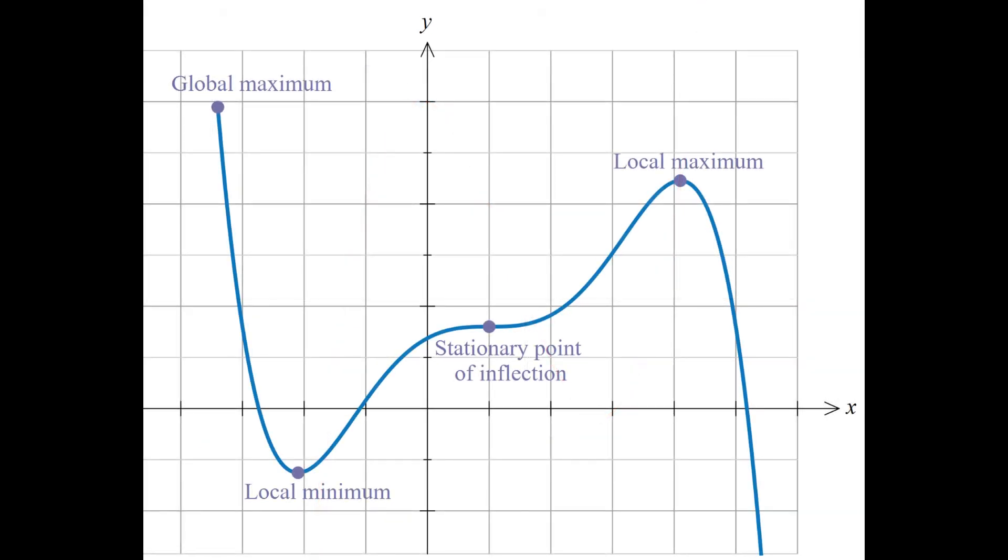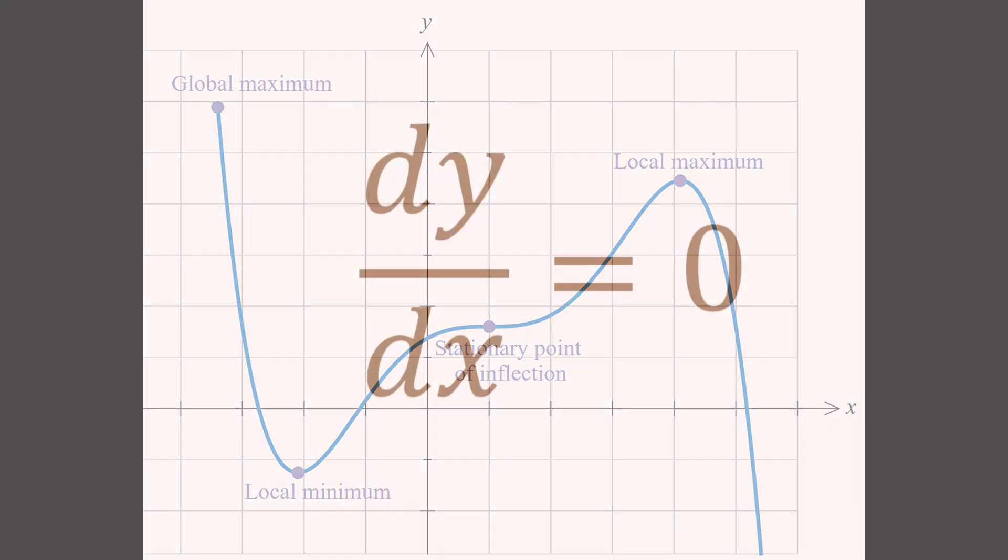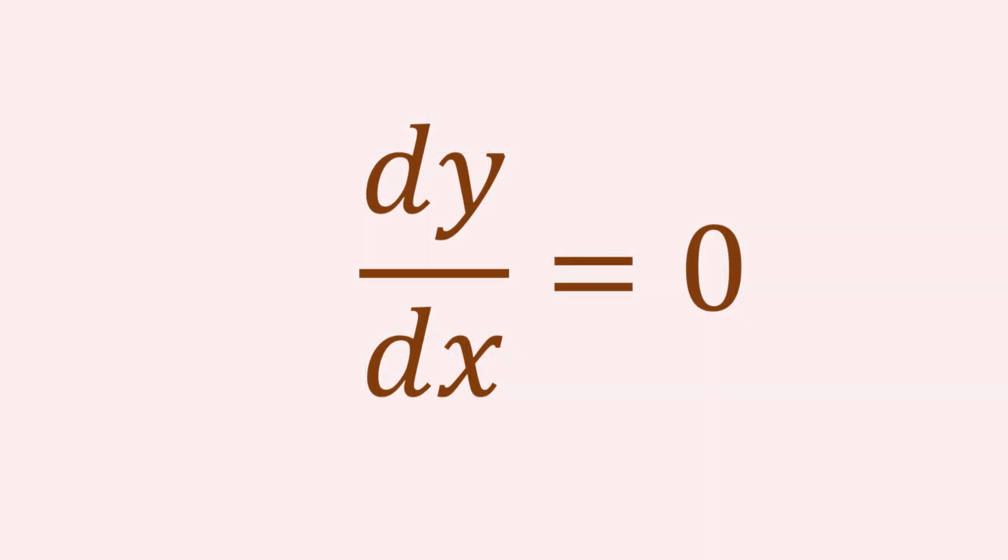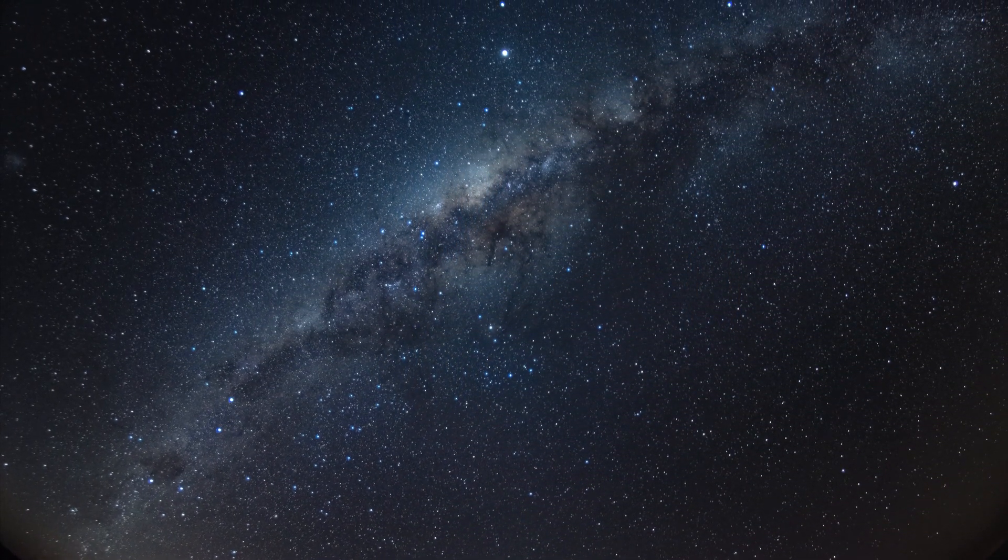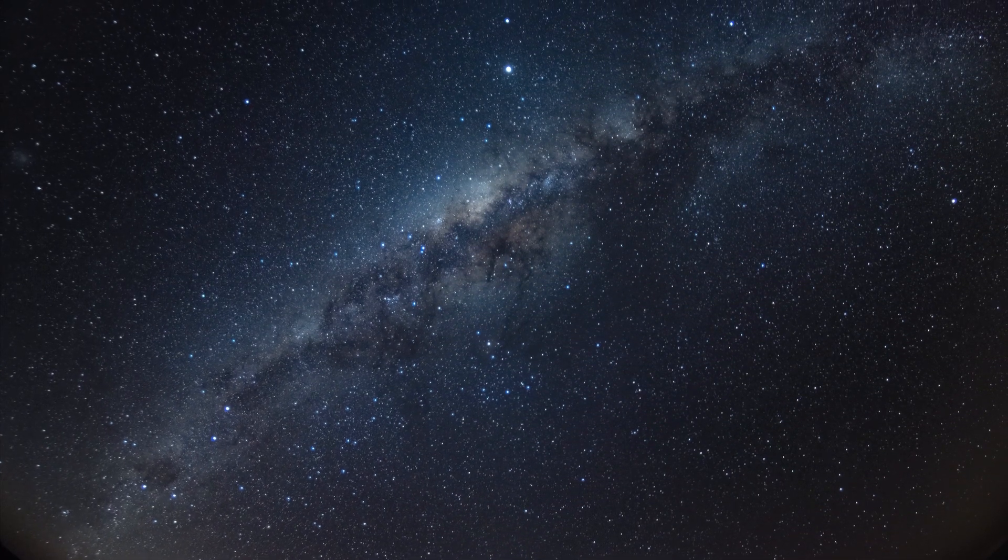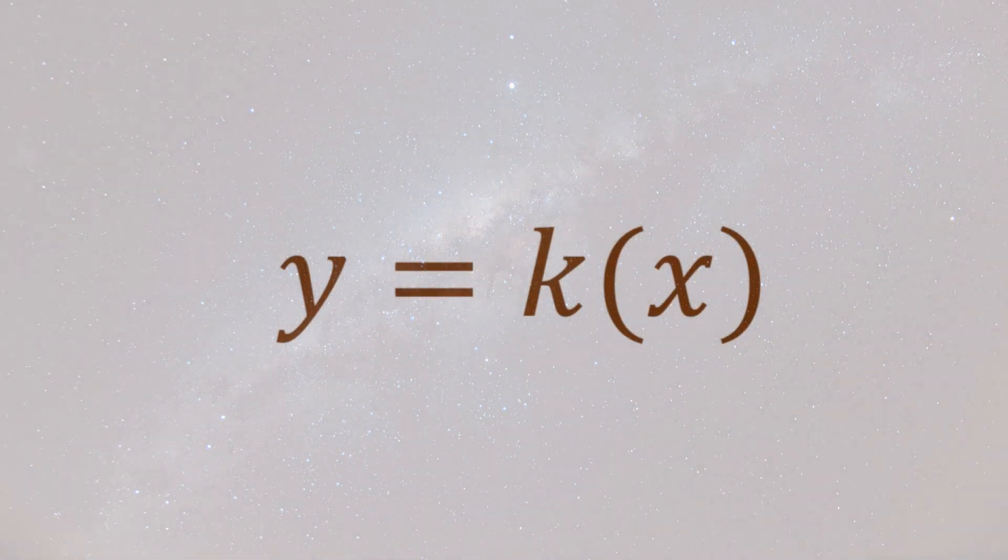When finding the extremal of a function, we use a key principle. That is setting the variation, in other words, the derivative equal to zero. Afterward, the position where the extremal is present, which is defined by the values of each of the variables, can be found.